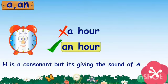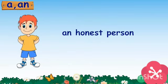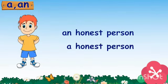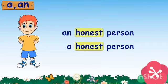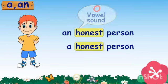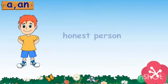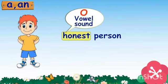Here is another example. What will you use with 'honest' — A or AN? 'Honest' starts with the letter H, but the first sound of the word is the vowel sound O. Remember: it is the sound of the word that matters, not just the letter. So we say AN honest person.